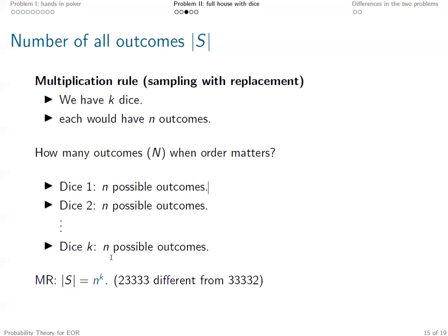Now we multiply K values of N together, giving N to the power K ordered outcomes. So, for example, the outcome two, three, three, three, three is a different outcome from three, three, three, three, two.